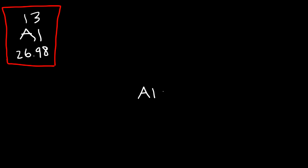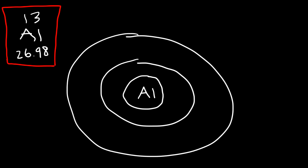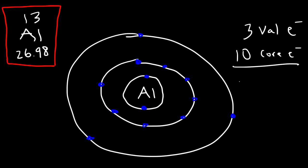So let's draw a picture. This is going to be the first shell, this is the second energy level, and this one is going to be the third. In the first energy level there are 2 electrons. The second can hold a maximum of 8 electrons. So right now we have a total of 10, but we need to get up to 13, so that's 13. So aluminum has 3 valence electrons — those are the electrons in the highest energy level. It has 2 in the first shell and 8 in the second shell, for a total of 10 core electrons. Adding 10 plus 3 gives us the atomic number: 13 electrons in total.